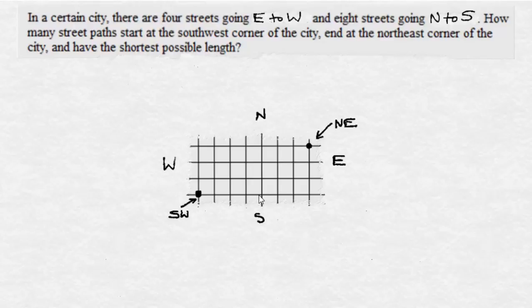In this example, we're going to look at how many paths there are to get through a grid. In a certain city, there are four streets going east to west and eight streets going north to south. How many street paths start at the southwest corner of the city and end at the northeast corner of the city and have the shortest possible length?